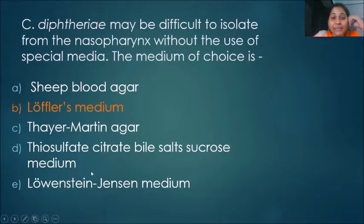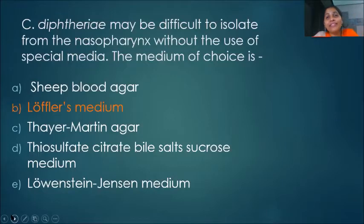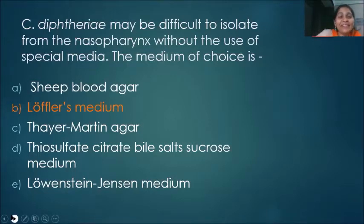TCBS is used for Vibrio — it is a selective medium for Vibrio. What about Thayer-Martin? It's a selective medium for Neisseria, a gram-negative diplococcus. Okay, going to the next question.